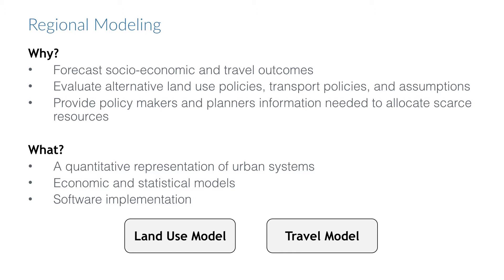A model can be used to analyze different scenarios to evaluate different outcomes using different assumptions and policy proposals, giving policymakers an important analytical tool to help them make more informed choices. The two most common model types in use by regional planning agencies are the land use model and the travel model — quantitative representations of urban systems, with the former focused on socioeconomic and built space, and the latter focused on travel patterns.